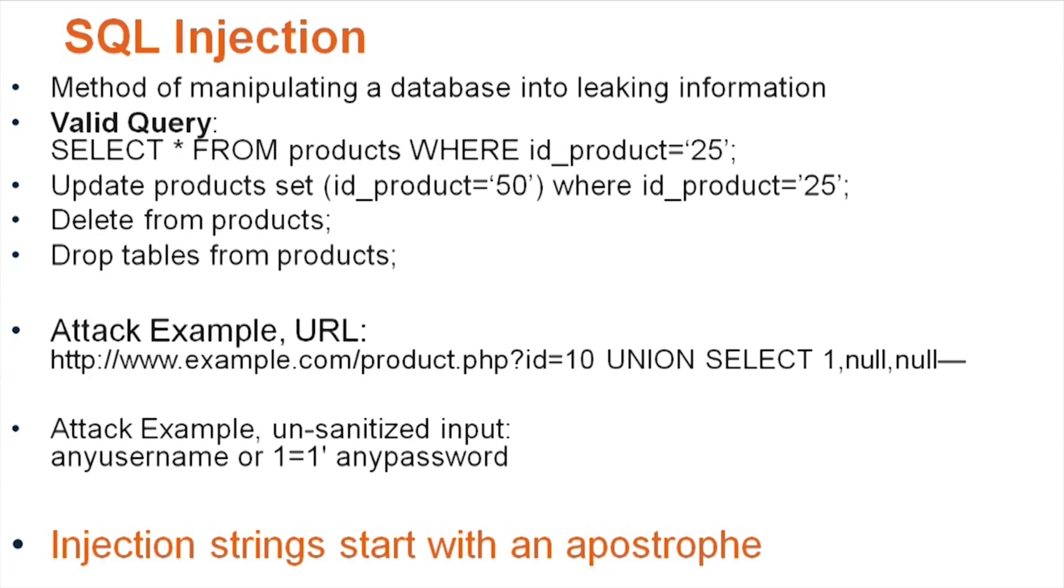And the way you do it is you take a valid query and then you modify that query a little bit. So let's look at what a valid query is. Select star from products where ID product equals 25.